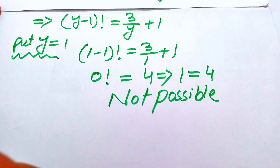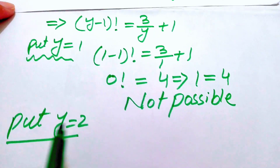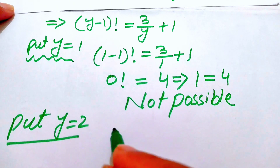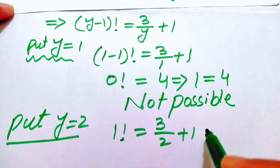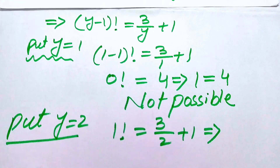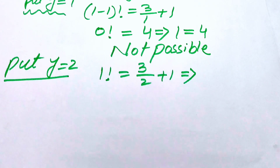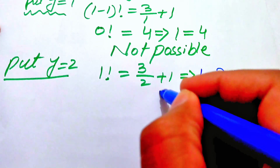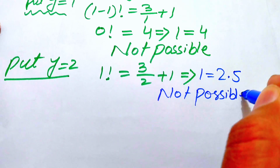Next, substitute y equals 2: (2 minus 1) factorial equals 3 over 2 plus 1, which gives 1 factorial equals 2.5. Since 1 factorial equals 1, we get 1 equals 2.5, which is not possible. So y equals 2 is also rejected.